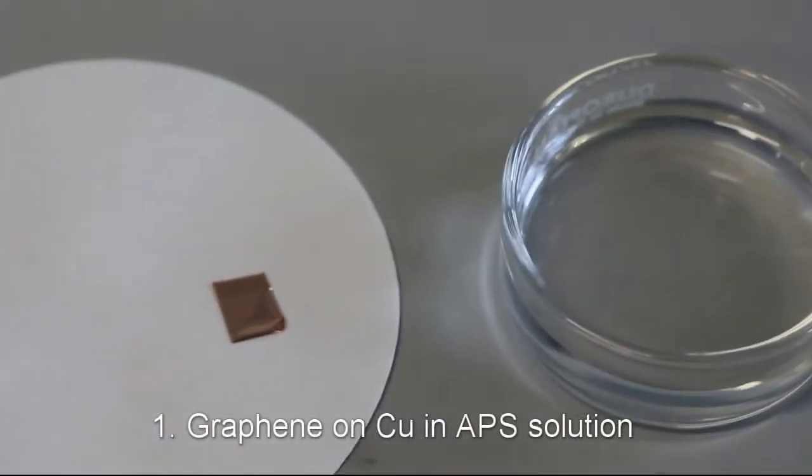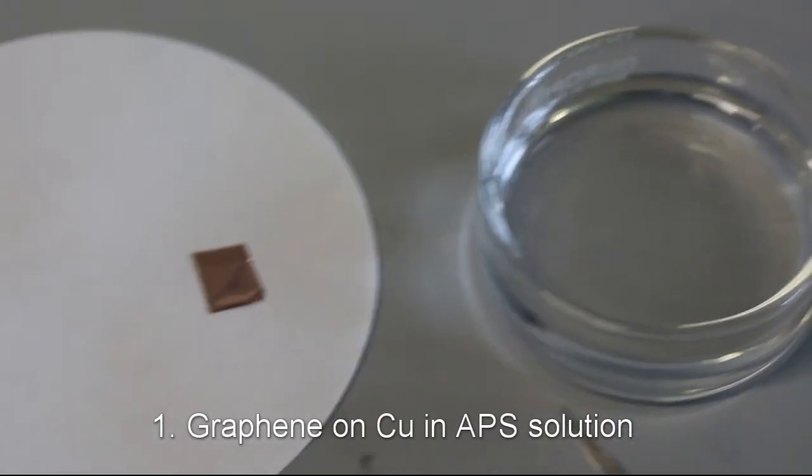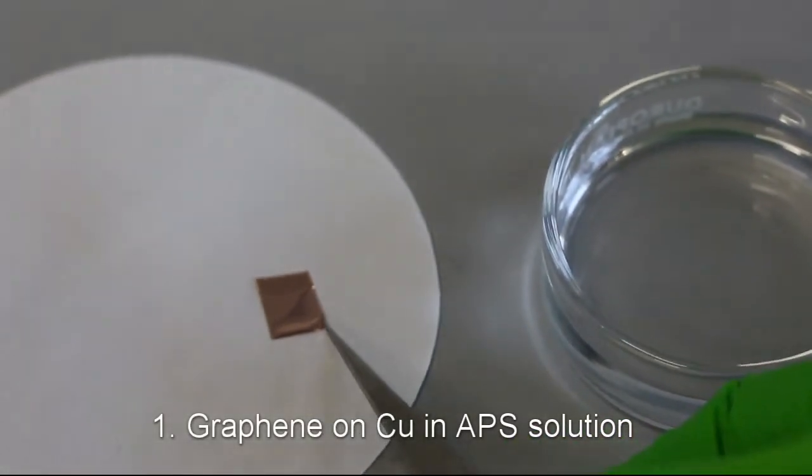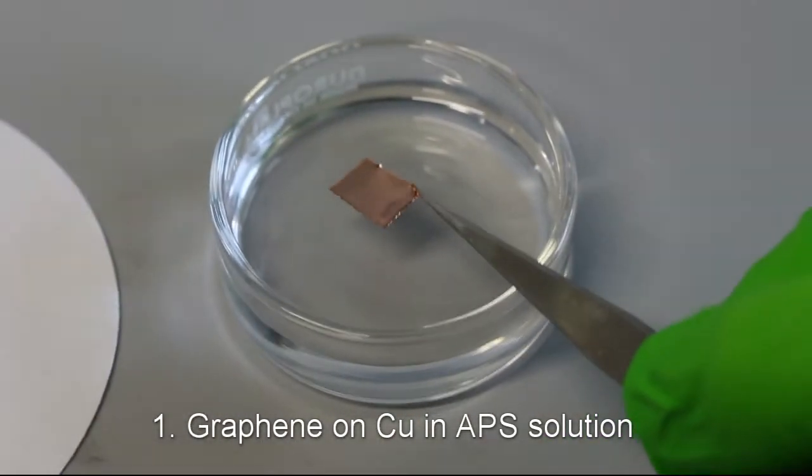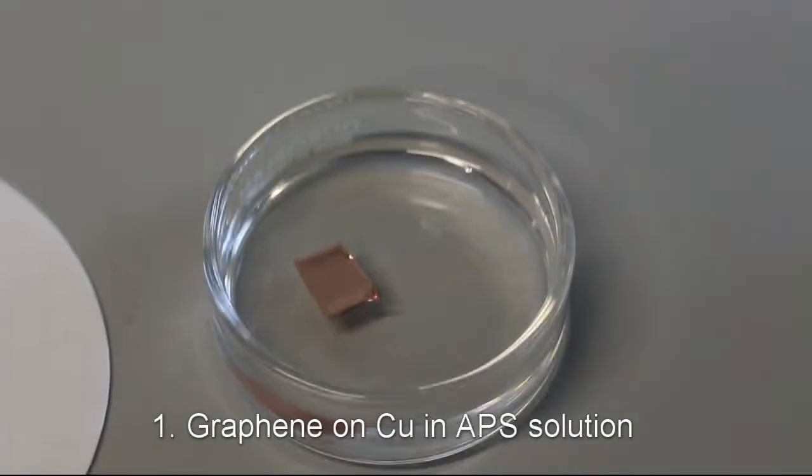For the transfer, we first have to assemble the biphasic interface and graphene in it. For that, we place a sample of graphene grown on copper with a pre-etched backside on the surface of aqueous solution of ammonium persulfate.